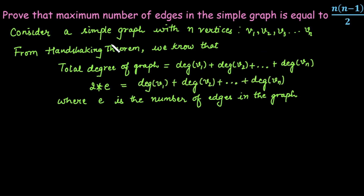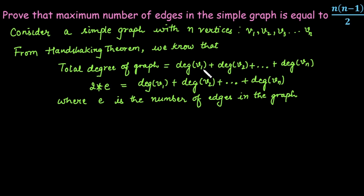We need to find the maximum number of edges possible in a simple graph, which means we consider the maximum degree any vertex can have. In a simple graph with no self-loops and no multiple edges, the maximum degree of any vertex is n-1, since it can connect to at most n-1 other vertices.